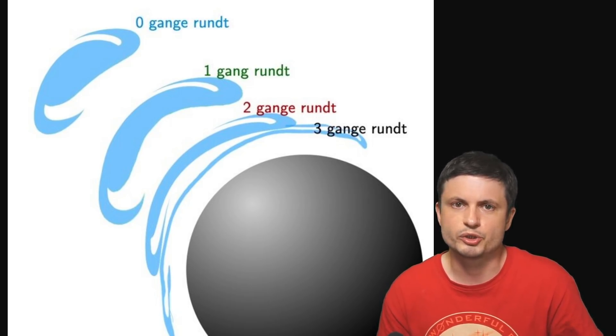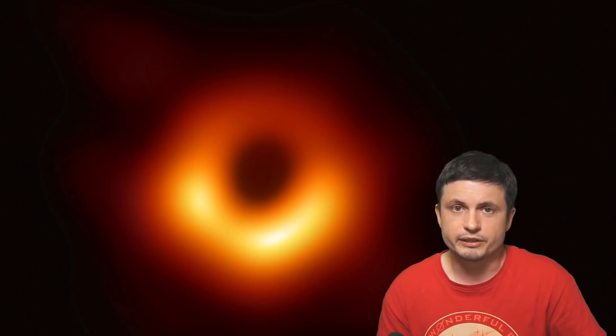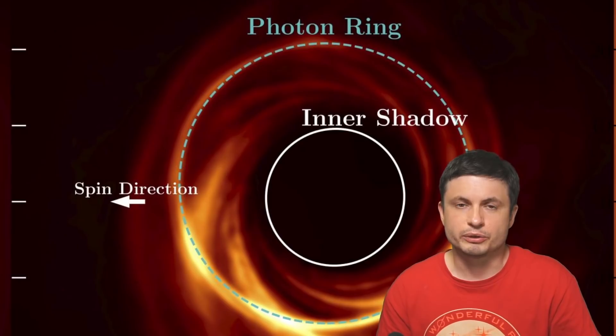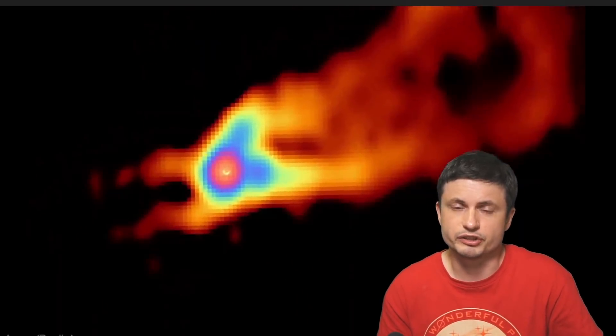Now going back to that image of M87, even here, even despite many years, the scientists still have not been able to detect exactly where the photon ring is. Now the ring itself should be somewhere in this region and could maybe even be detected if more telescopes are added to the Event Horizon Telescope, but at the moment it's still invisible.